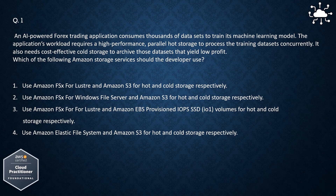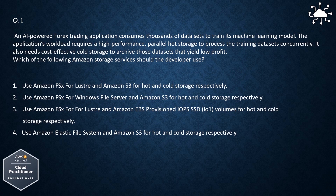Option 1: Use Amazon FSx for Lustre and Amazon S3 for hot and cold storage respectively. Option 2: Use Amazon FSx for Windows File Server and Amazon S3 for hot and cold storage respectively. Option 3: Use Amazon FSx for Lustre and Amazon EBS provisioned IOPS SSD IO1 volumes for hot and cold storage respectively. Option 4: Use Amazon Elastic File System and Amazon S3 for hot and cold storage respectively.